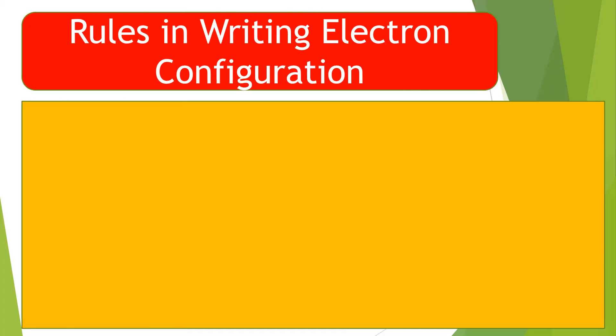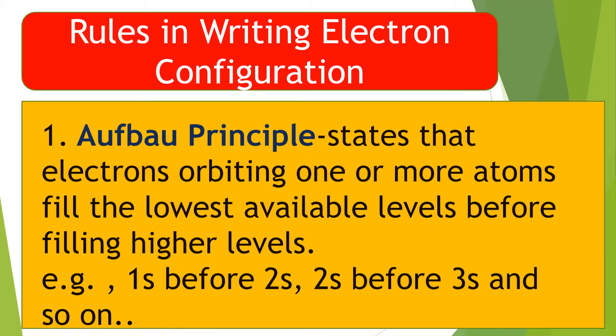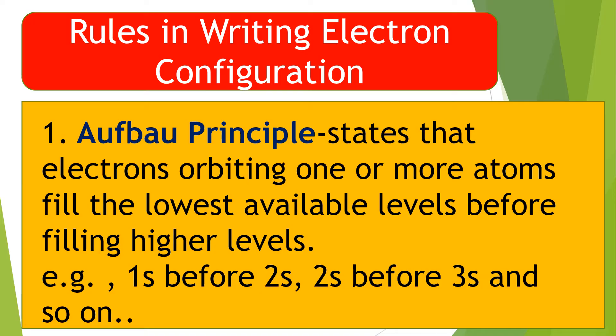Rules in Writing Electron Configuration. Rule 1: The Aufbau Principle states that electrons orbiting one or more atoms fill the lowest available levels before filling higher levels. Example: 1s before 2s, 2s before 3s, and so on.